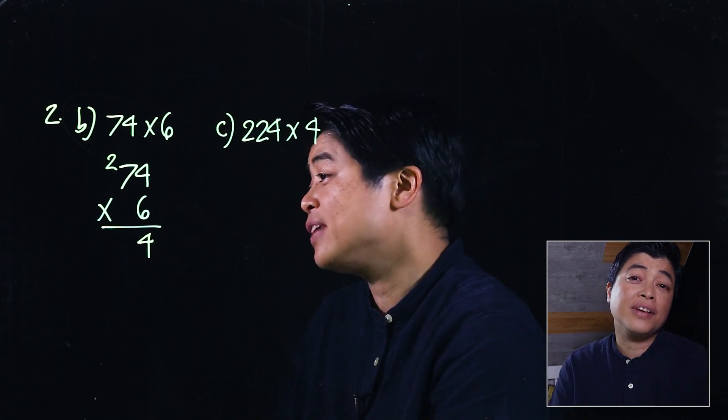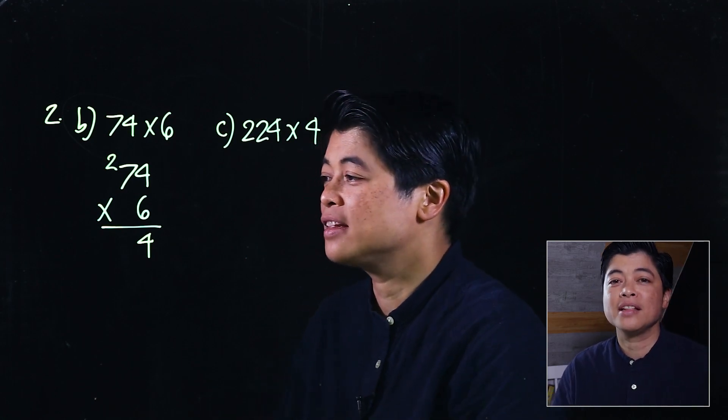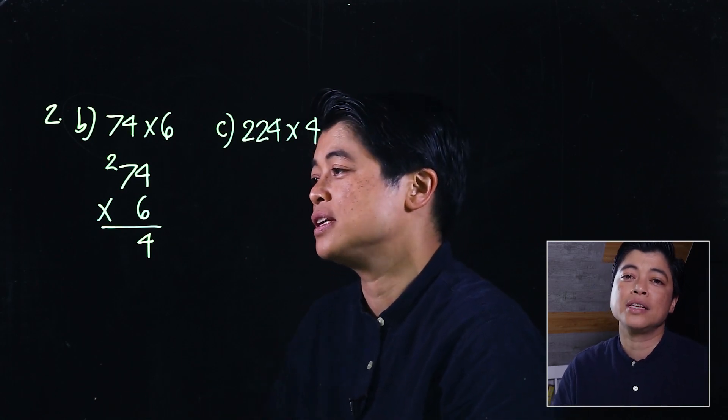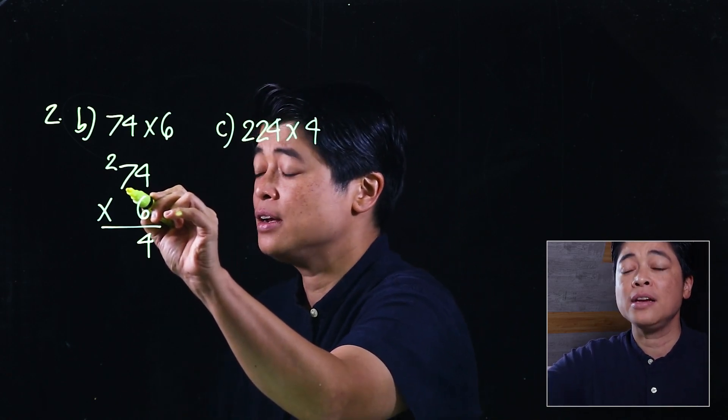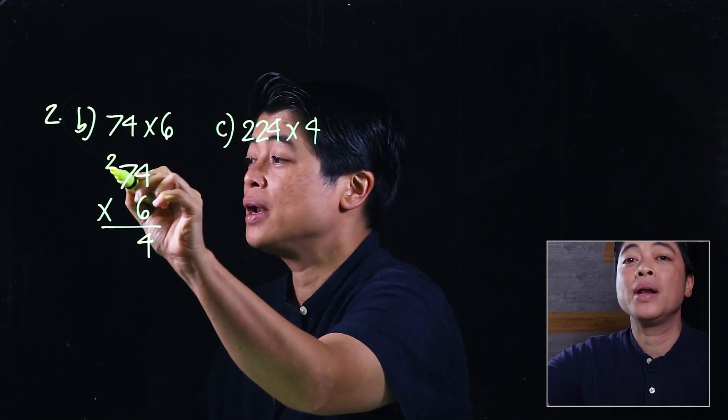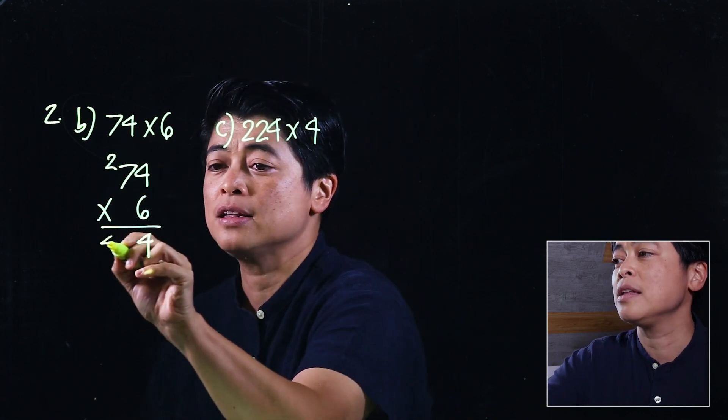They could also use flashcards, which means it doesn't make a difference which way they count because they would have memorized it. Then we take 6 times 7 which is 42, plus a 2 makes it 44.